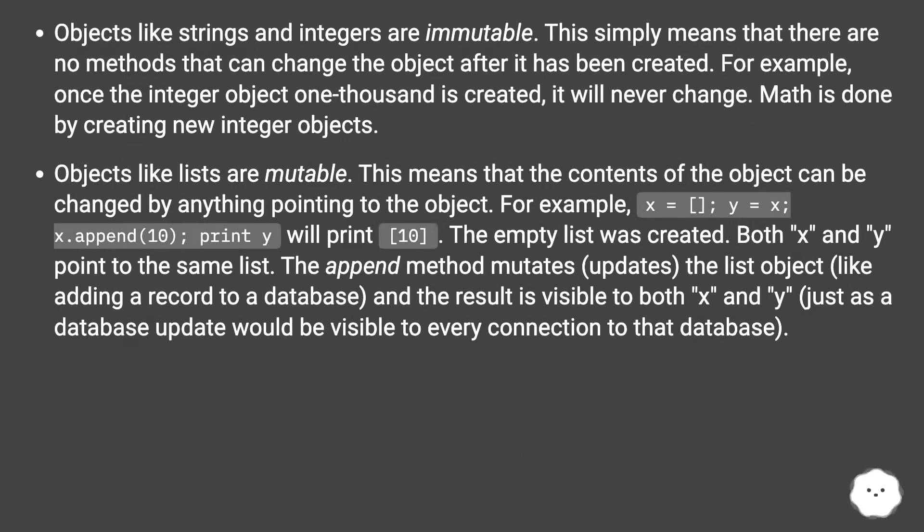Objects like strings and integers are immutable. This simply means that there are no methods that can change the object after it has been created. For example, once the integer object 1000 is created, it will never change. Math is done by creating new integer objects.